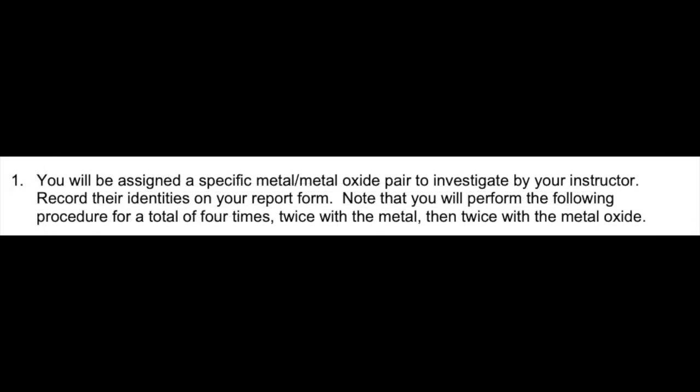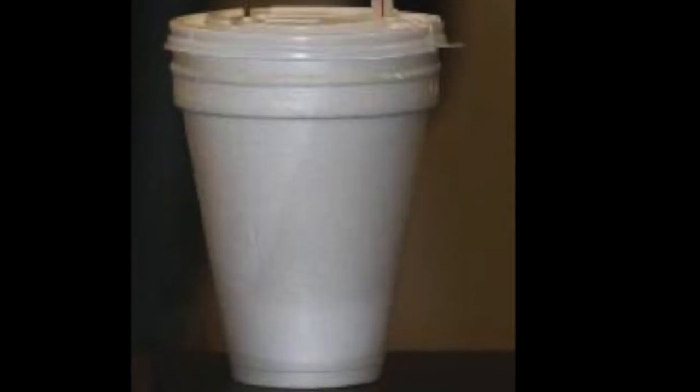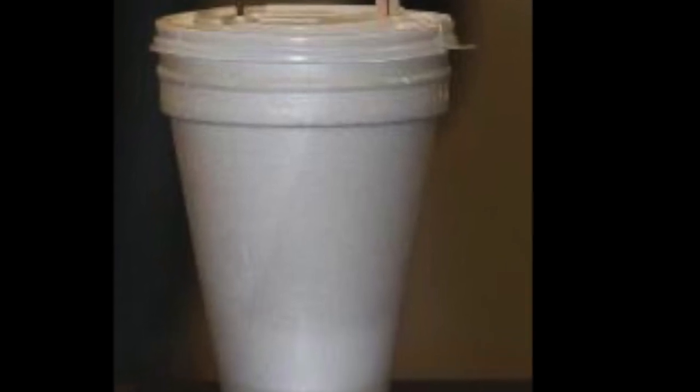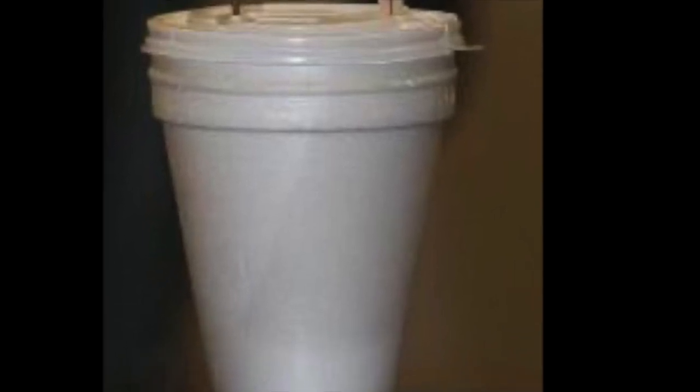The lab requires us to collect four sets of data. The first two are repeated measurements for a reaction between a metal and HCl. The last two data sets are for the reaction between the corresponding metal oxide with HCl. The reaction will be carried out in a coffee cup calorimeter, which is made of two styrofoam cups that are stacked together.